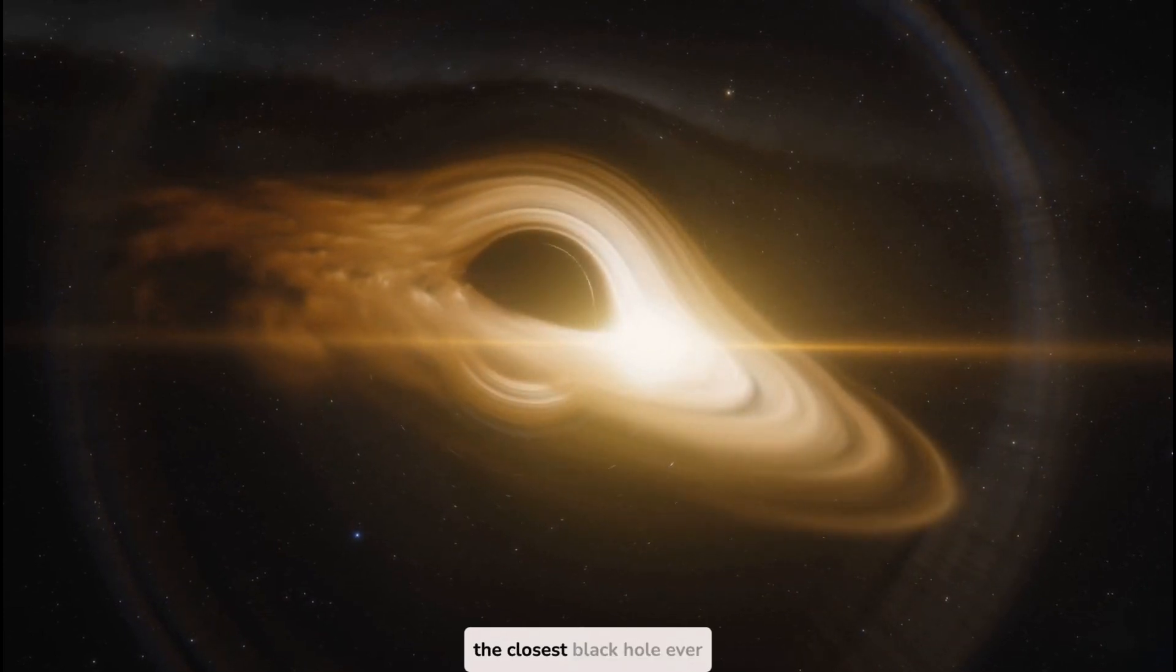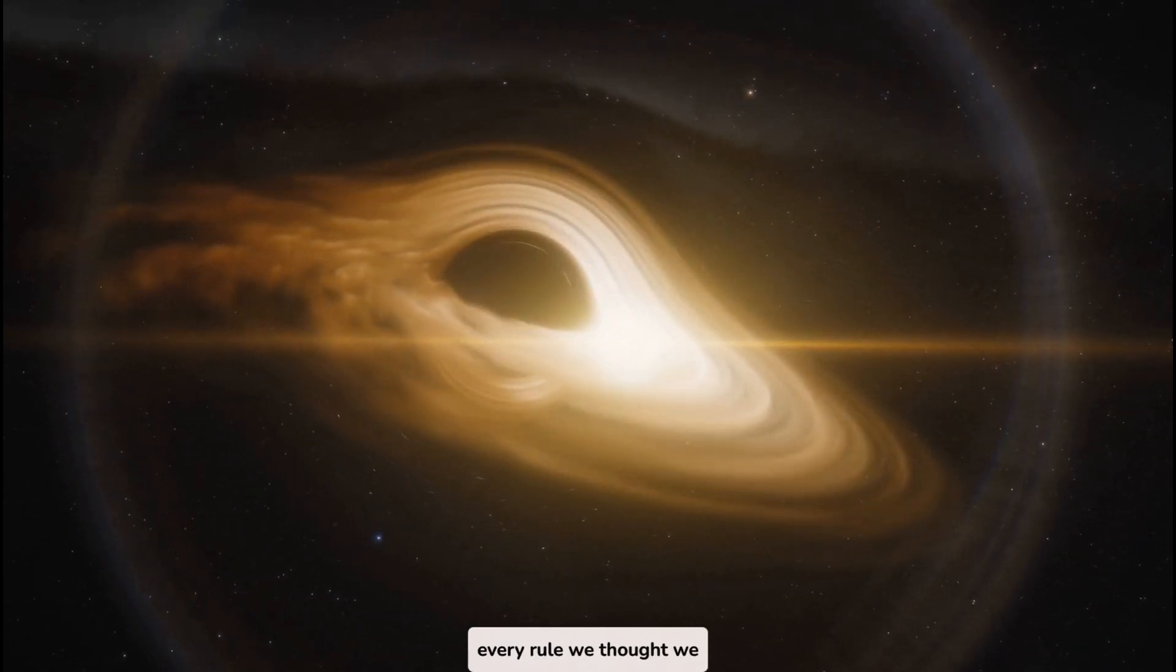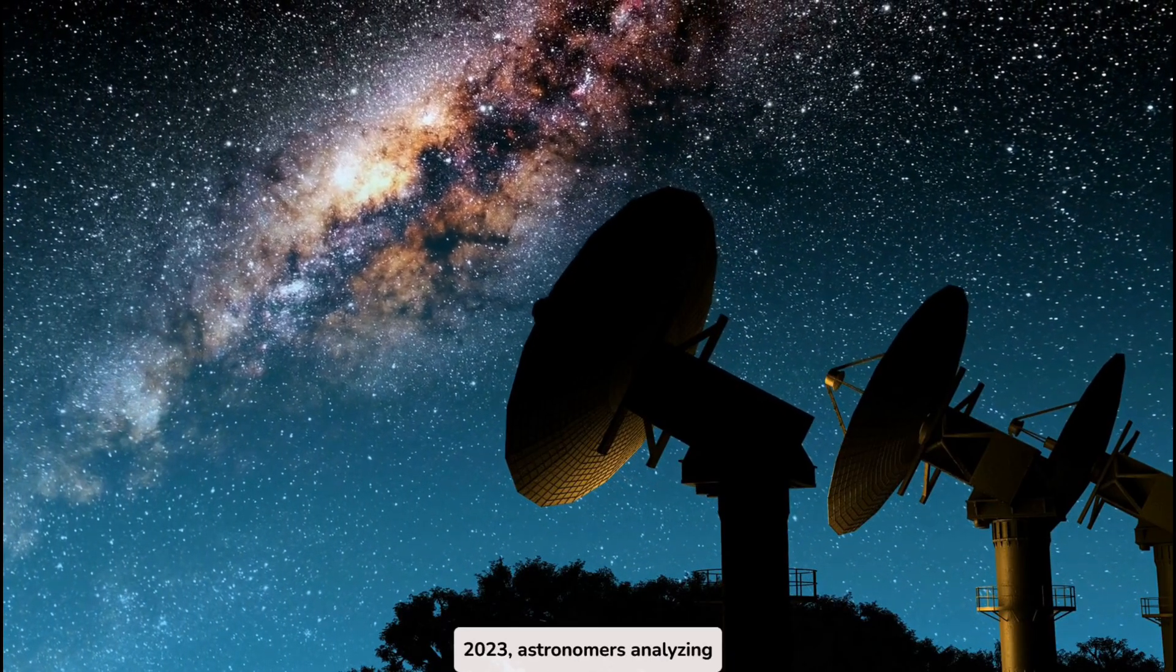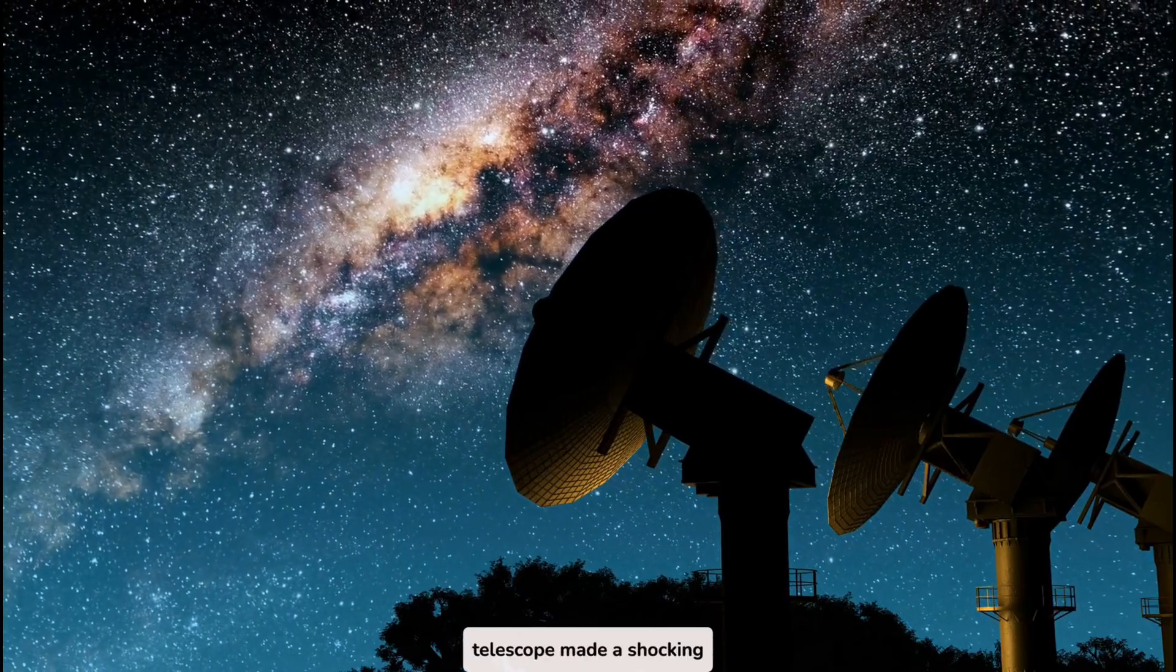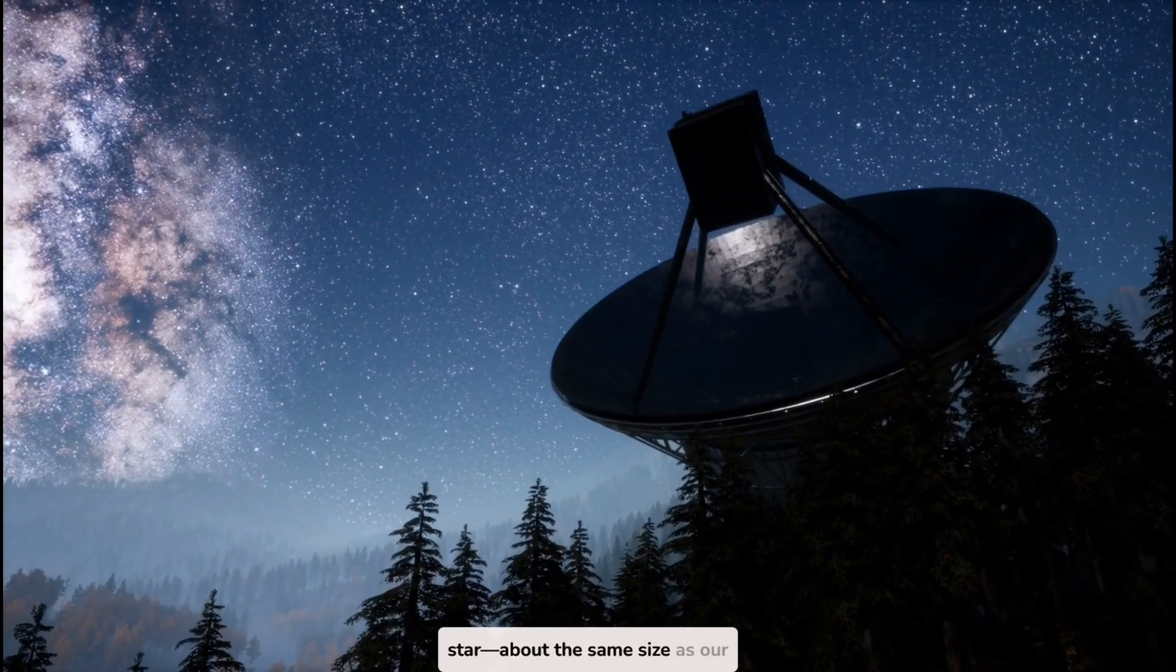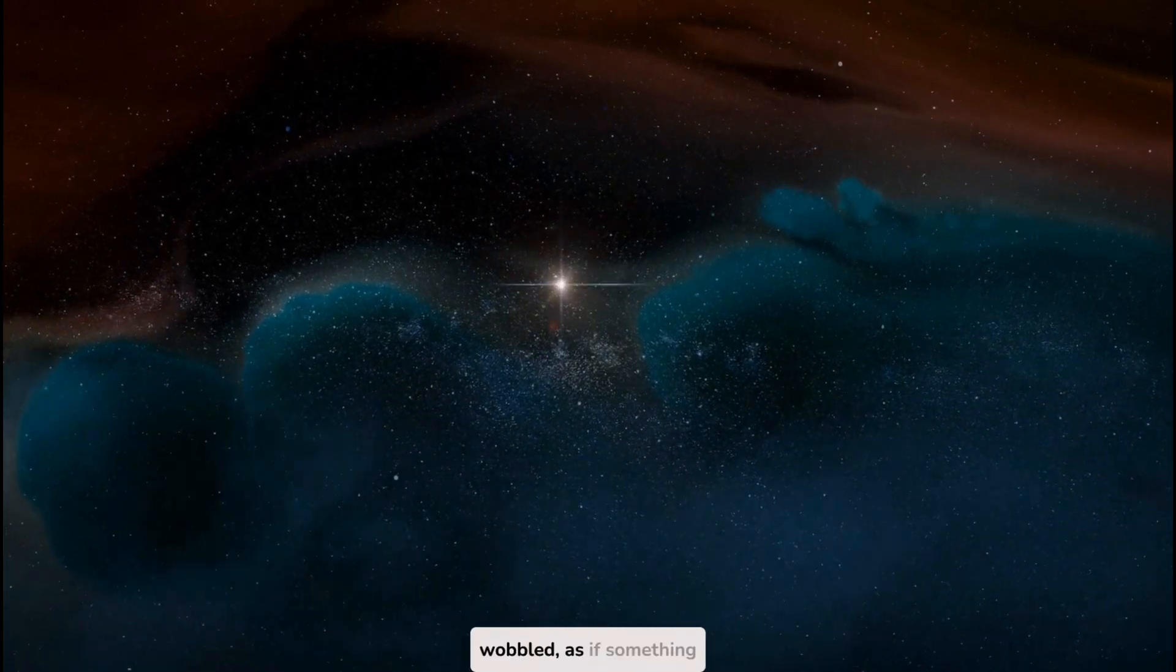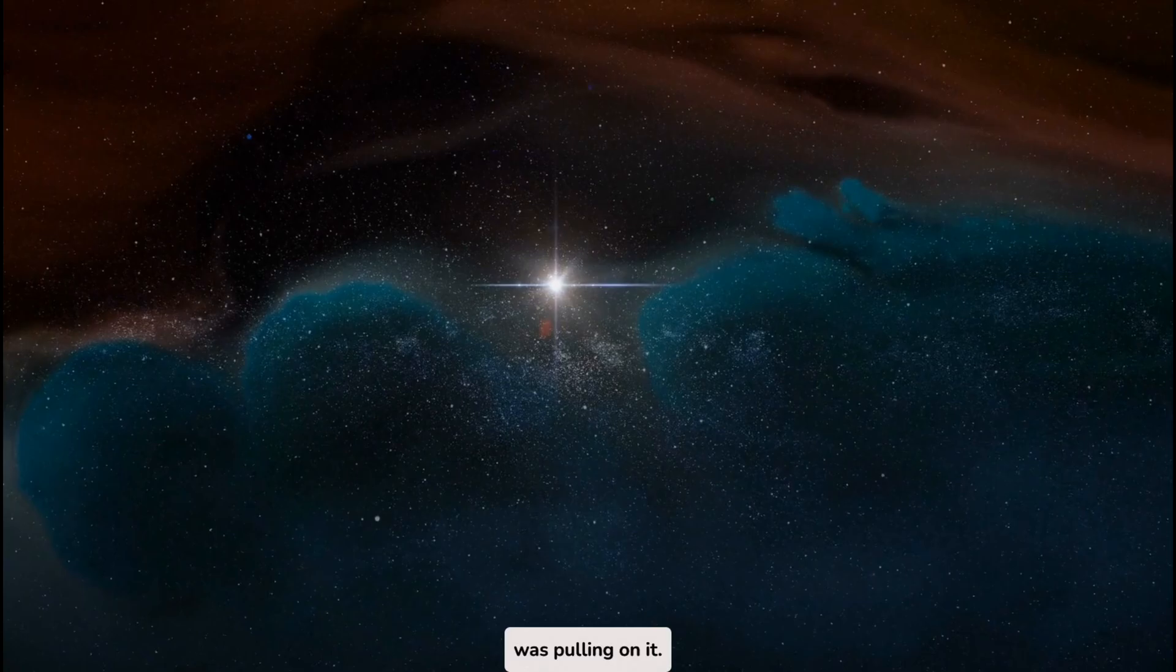This is Gaia BH1, the closest black hole ever found, and it's breaking every rule we thought we knew. In 2023, astronomers analyzing data from the European Space Agency's Gaia telescope made a shocking discovery. A star, about the same size as our sun, was behaving strangely. It wobbled, as if something massive, yet invisible, was pulling on it.